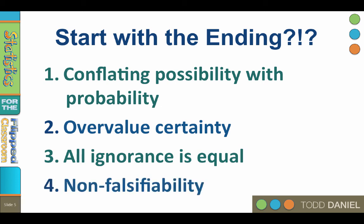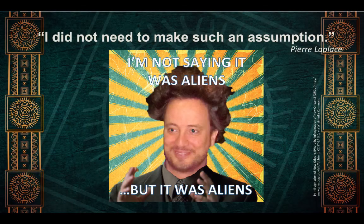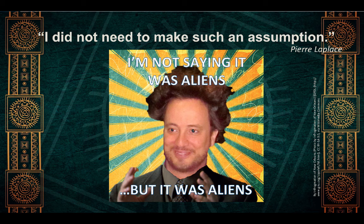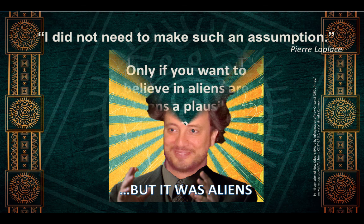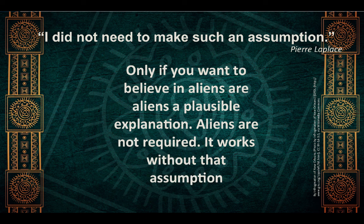The fourth problem is non-falsifiability. When scientists show how Easter Island was really constructed, that doesn't undermine Ancient Aliens Guy's alien hypothesis. Just because he was wrong about Easter Island doesn't mean aliens didn't kill the dinosaurs or leave behind their crystal skulls. His alien hypothesis can never be proven false, no matter how many times he is proven wrong. True believers and conspiracy theorists start with the conclusion and then look for evidence to support it, ignoring evidence that doesn't fit. That's not honest, and it's not necessary. Aliens are not required — it works without that assumption. So let's do some science.